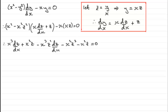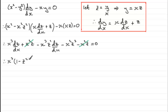I notice that x²z and minus x²z cancel to give zero. I can now group the two terms containing dz/dx and pull out x³ as a common factor, giving x³(1 − z²)·dz/dx, with dz/dx written at the rear of the bracket — always a good position.